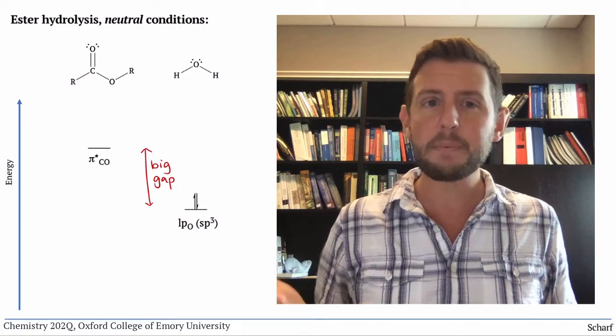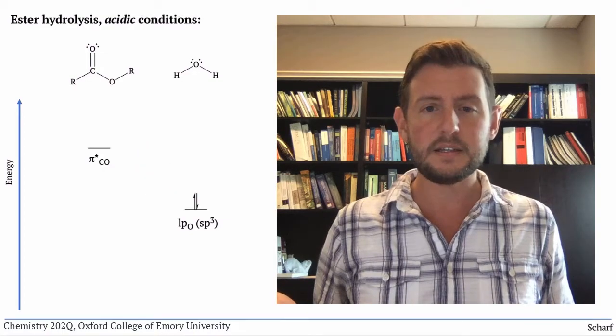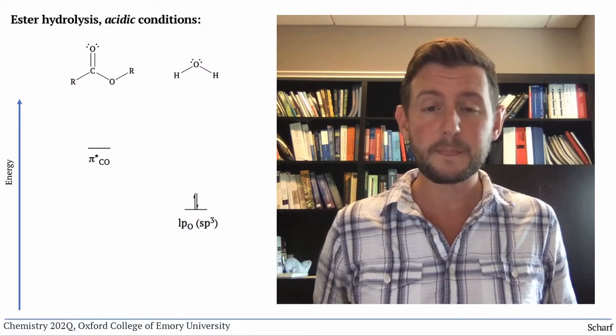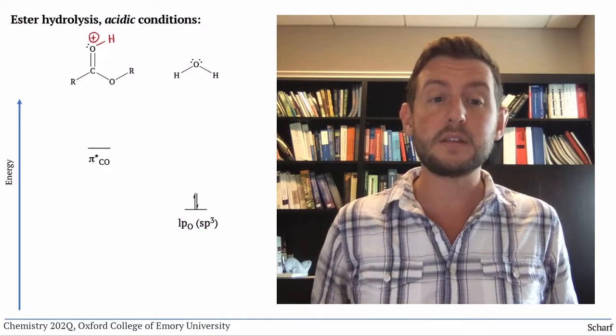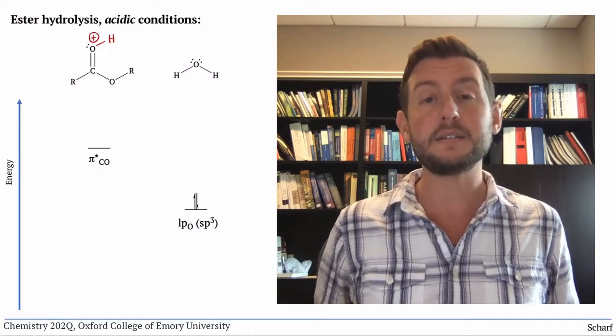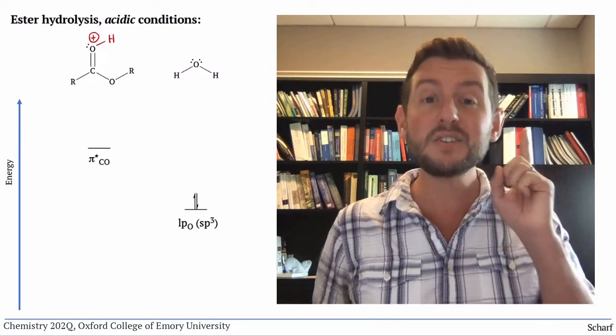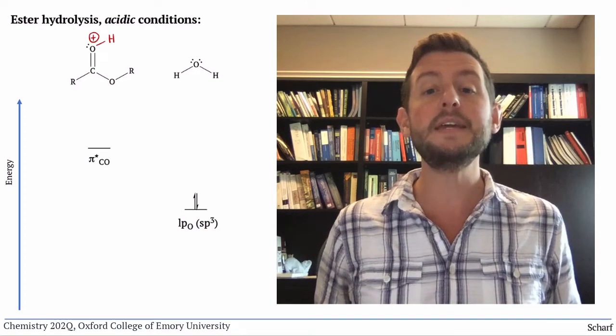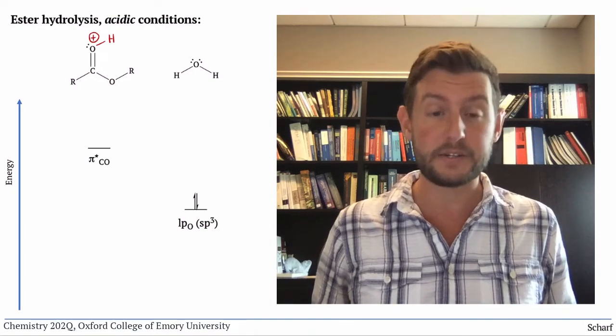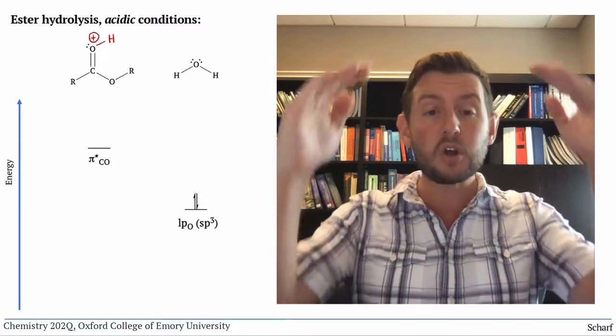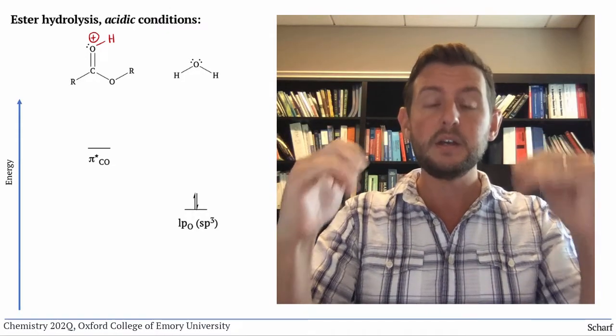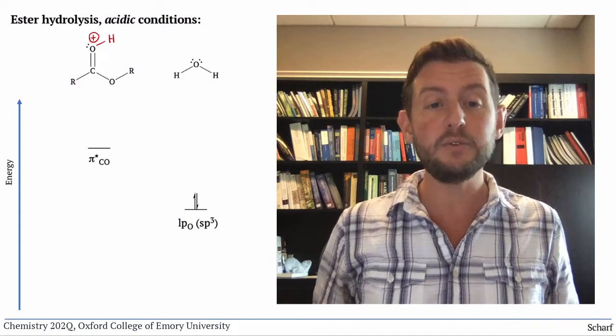But what happens with acid catalysis? Do you remember the role of H plus? It protonates the carbonyl group, giving it a positive charge. And charge is one of the key factors that affects orbital energies. Positive charge lowers orbital energies.